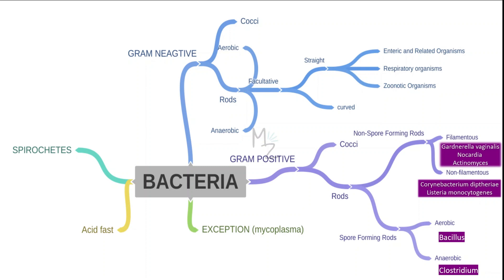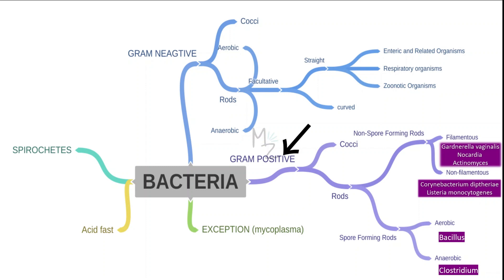Before talking about Listeria monocytogenes in detail, we should know about the classification of bacteria. Bacteria are classified into Spirochetes, Acid Fast, Mycoplasma, and on the basis of gram staining into gram-negative and gram-positive. We are not concerned here with gram-negative as we are talking about Listeria monocytogenes, which is gram-positive. Gram-positives are further subdivided into cocci and rods. We are done with cocci.